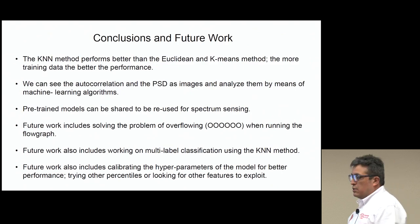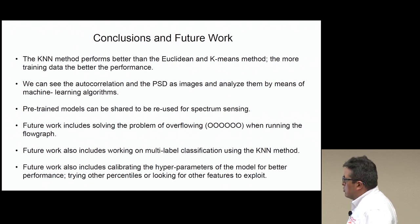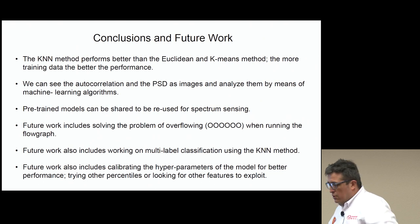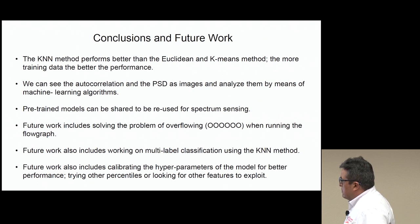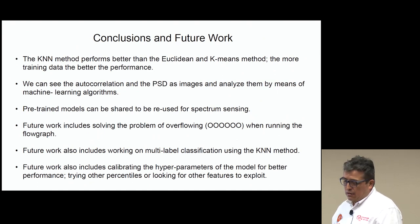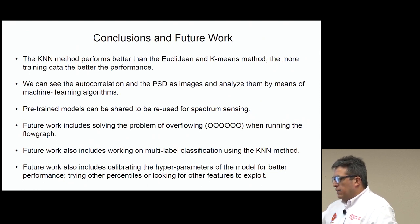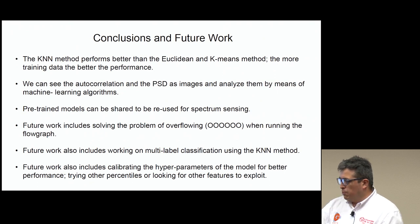Some conclusions: the KNN method performs better than the Euclidean and K-means methods. The more training data, the better the performance, as you heard in the morning presentation. We can analyze the autocorrelation and power spectral density as features for machine learning algorithms. Pre-trained models can be shared for spectrum sensing — someone can obtain and save a model in a file, and someone else can simply load it to perform spectrum sensing.